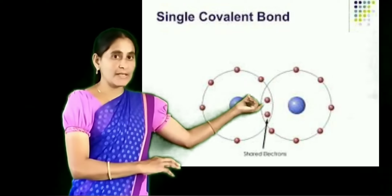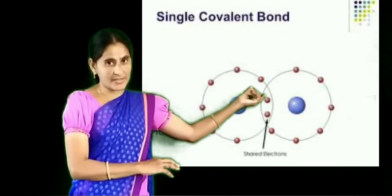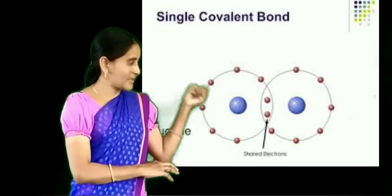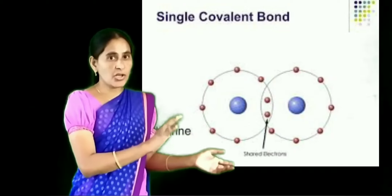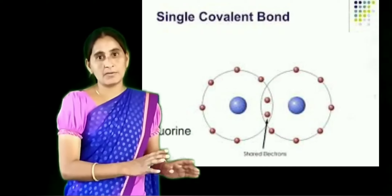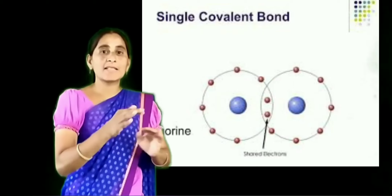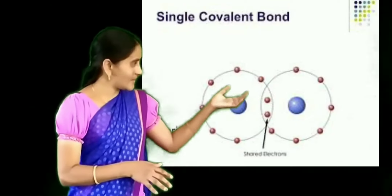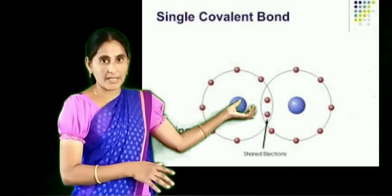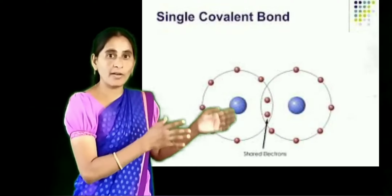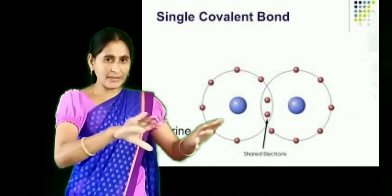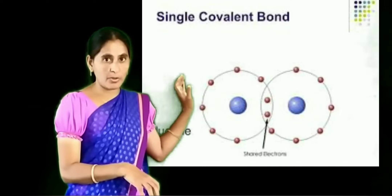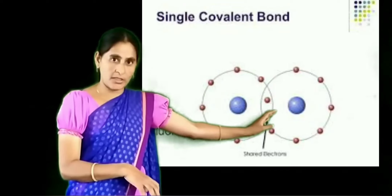When the electron jumps from one fluorine to the other and back again, it is not a complete transformation. It is just a mutual exchanging of the electron. As a result, the bond forming here is called covalent bond. There are many types of bonds, but the most important bonds are ionic bond and covalent bond.